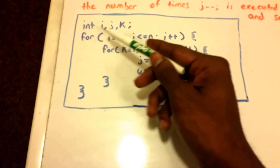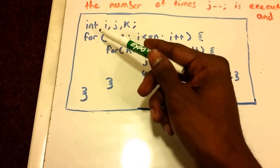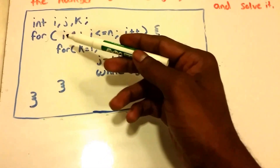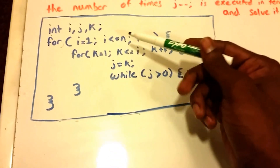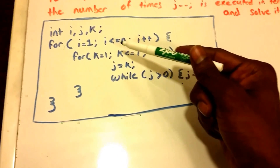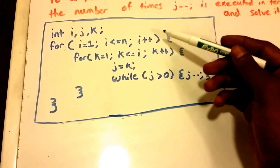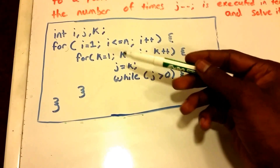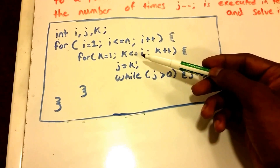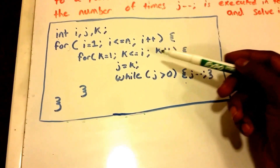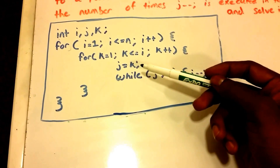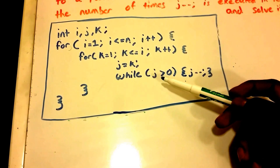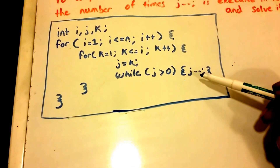First, it's declaring three variables i, j, and k as integers. Then it has a for loop that runs from i equals 1, while i is less than or equal to n — so it runs n times — and i increments by 1. Within this loop is another loop that runs from k equals 1 up to i, incrementing k by 1 each time. It sets j equal to k, and within that second loop is a while loop that runs while j is greater than 0, decrementing j by 1 each time.